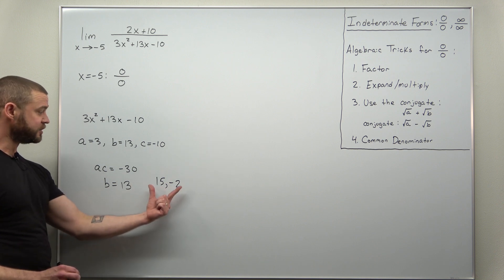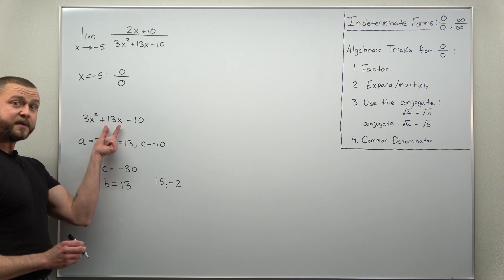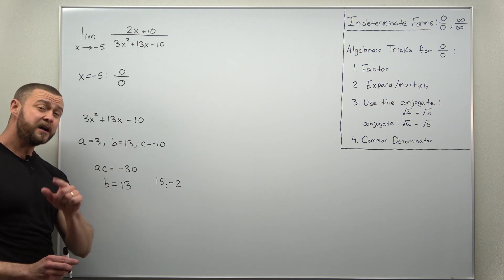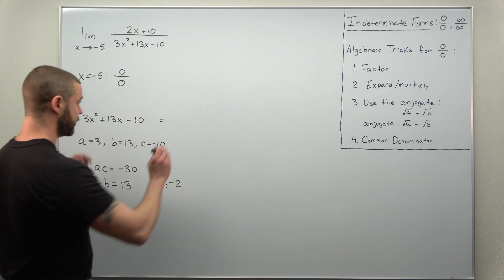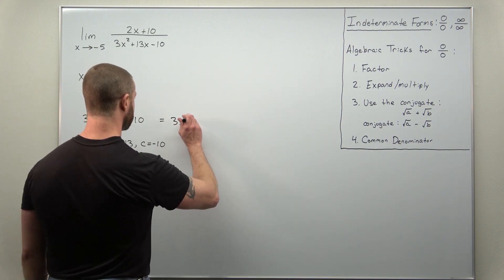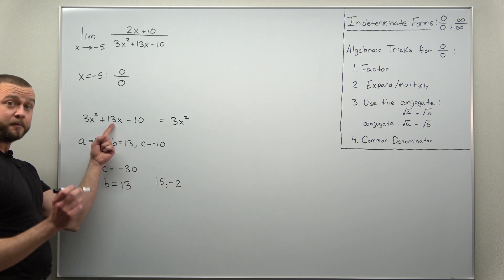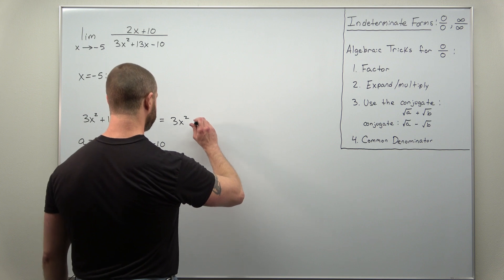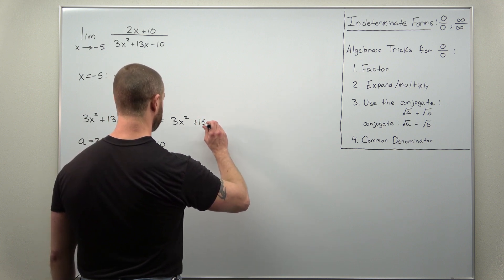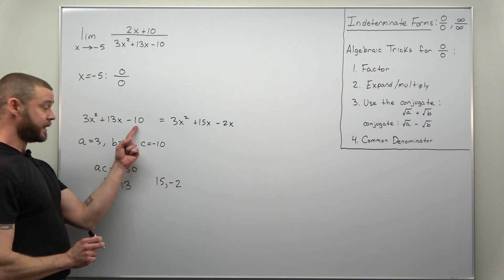Now how we actually use those integers is splitting apart the middle term here and then trying factoring by grouping. So we're going to keep the first term 3x squared. We're going to use 15 and negative 2 to split apart the middle term 13x. So we'll write that as plus 15x minus 2x and then minus 10.